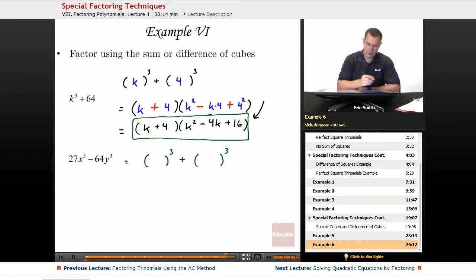What cubed would give us a 27? That must be a 3. And x cubed would give us an x cubed. Okay, so that looks good. To get a 64, this must be a 4y.